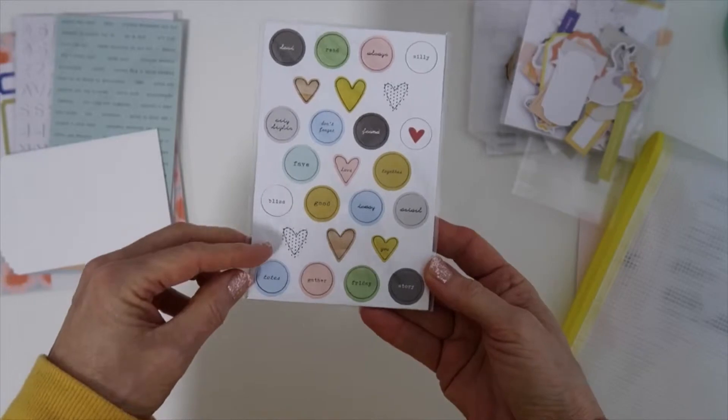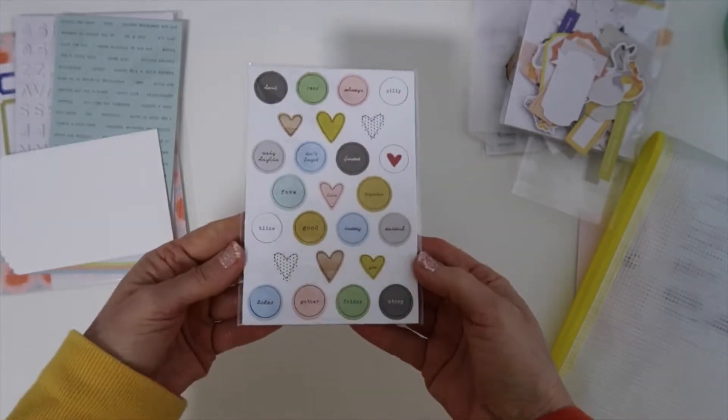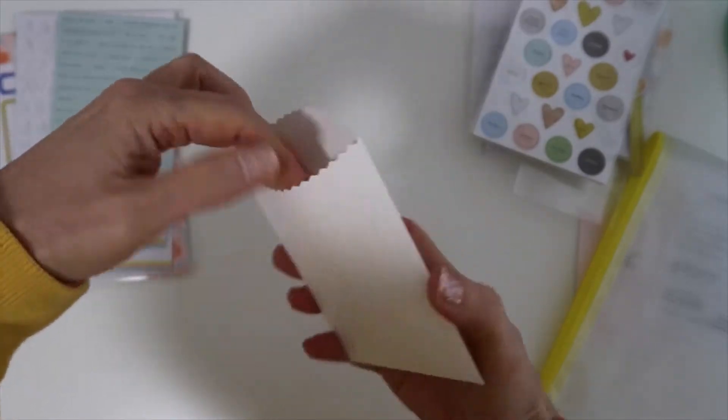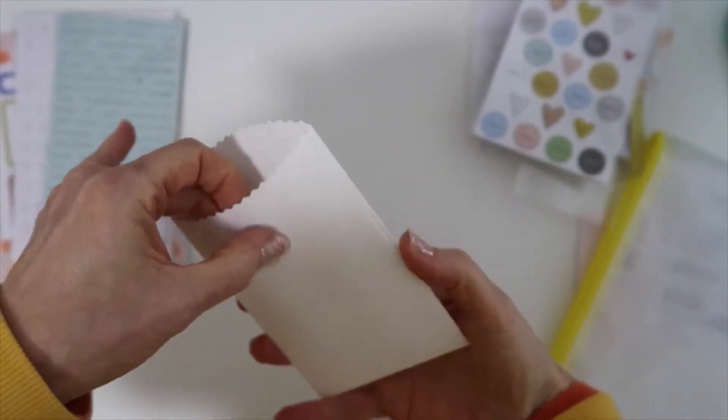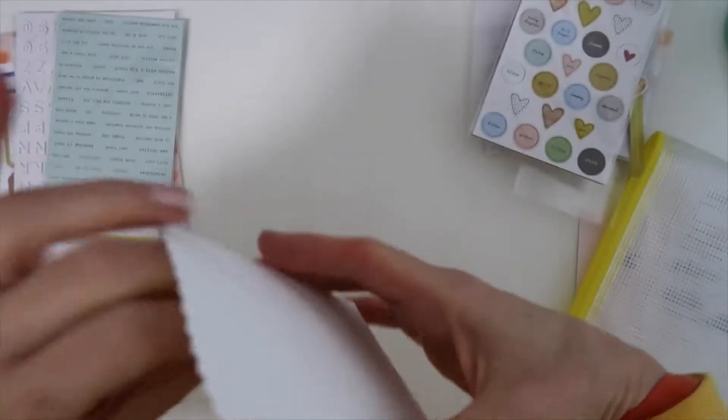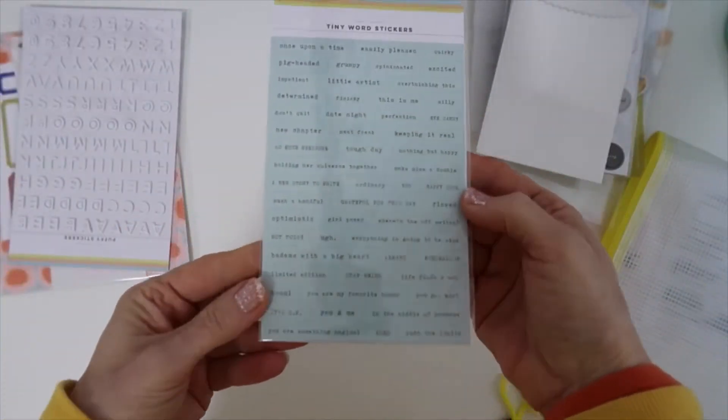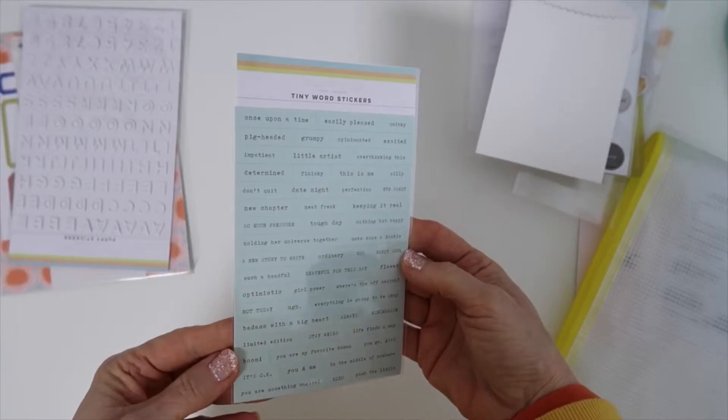And to coordinate with the kit you have these chipboard pieces, these circles and hearts. And again it's in that really nice small font. I love Trina's style with that. And then you have this cute little pocket you could use for journaling on your scrapbook layout.